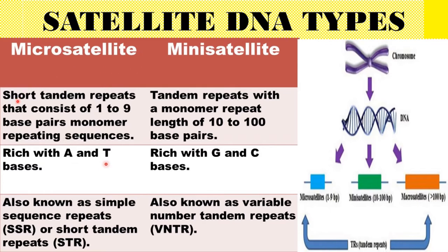Microsatellite consists of a short tandem repeat, whereas minisatellite consists of a tandem repeat. In the case of a short tandem repeat, it consists of 1 to 9 base pair monomer repeating sequences, whereas the tandem repeat with a monomer repeat length of 10 to 100 base pairs corresponds to minisatellite. Microsatellite is rich in adenine and thymine base pairs, whereas minisatellite is rich in guanine and cytosine bases.